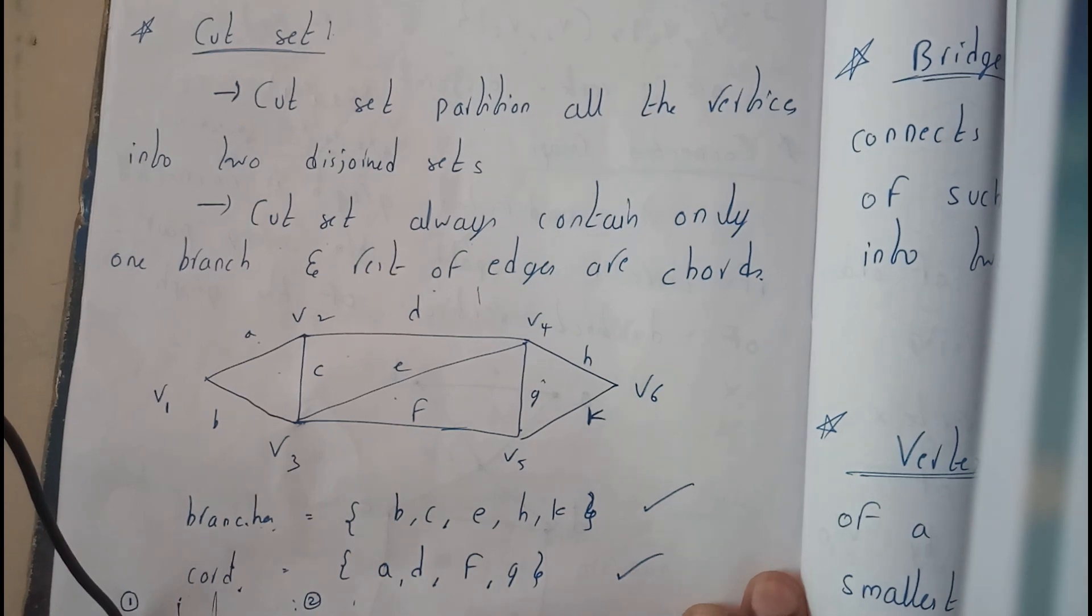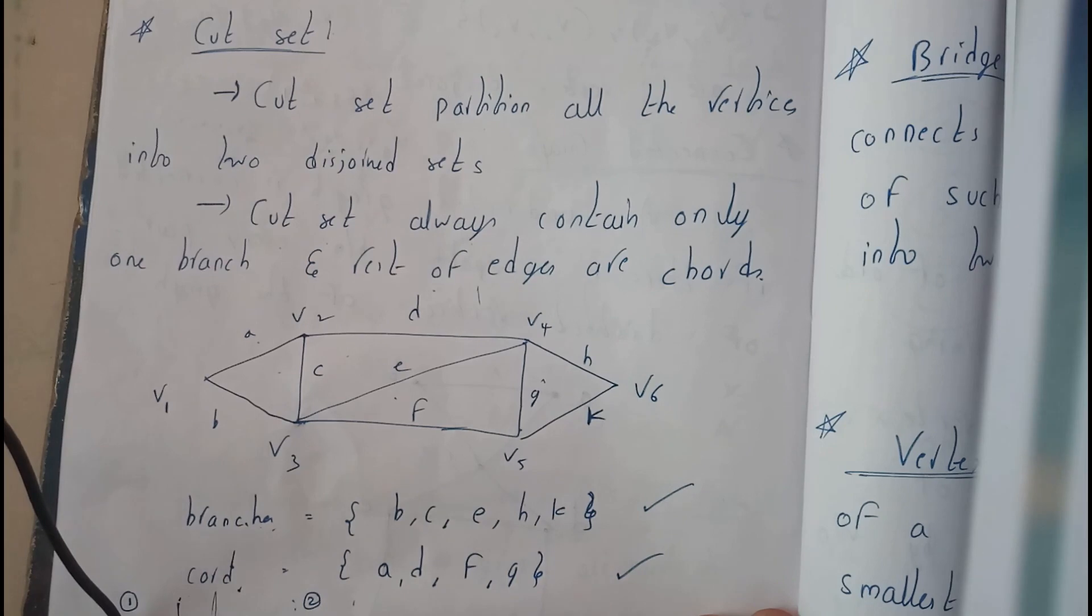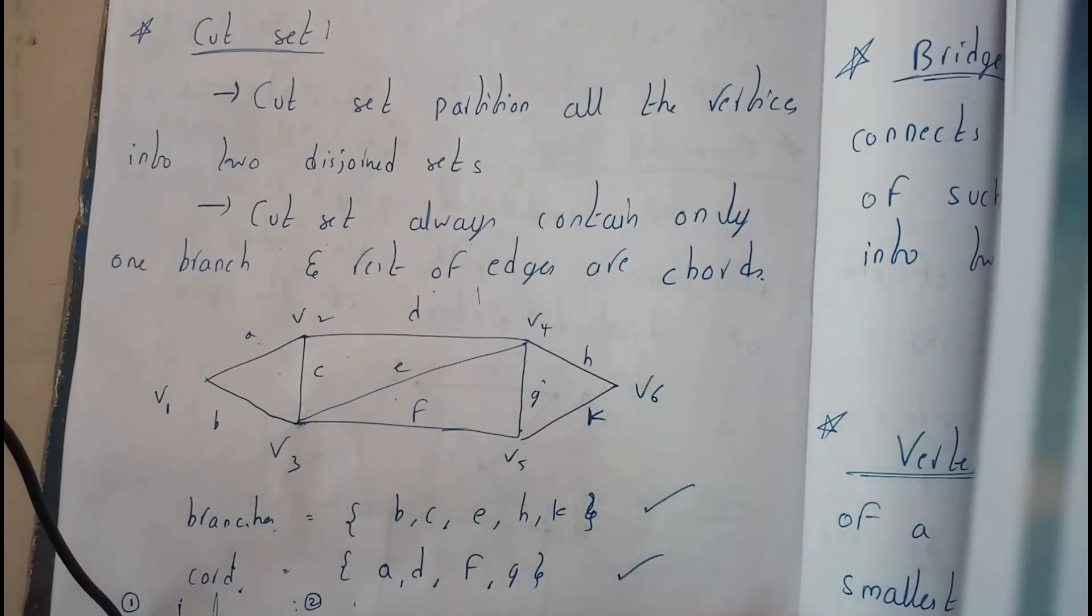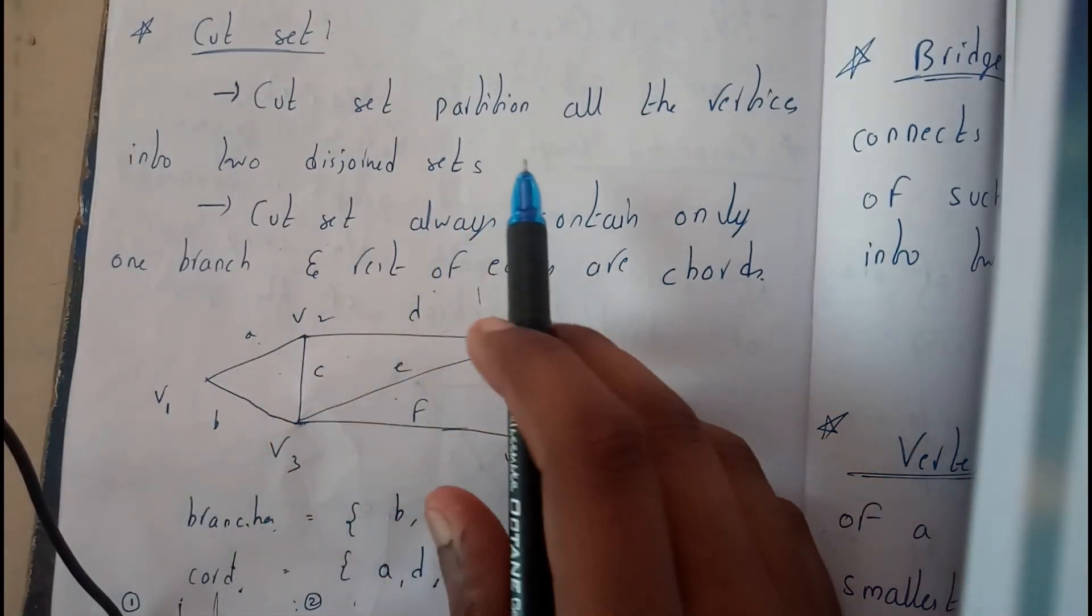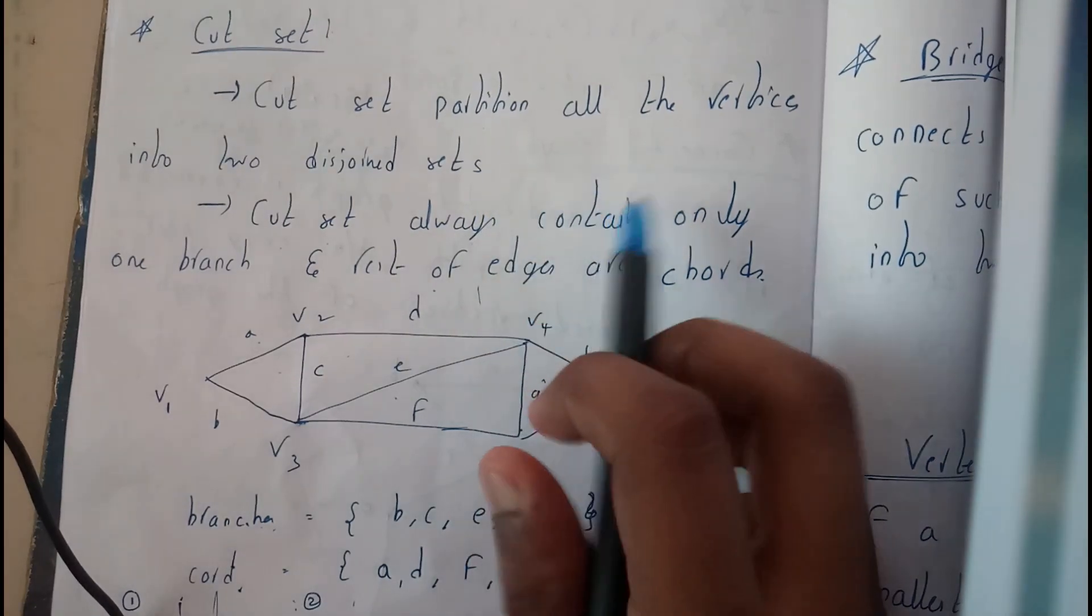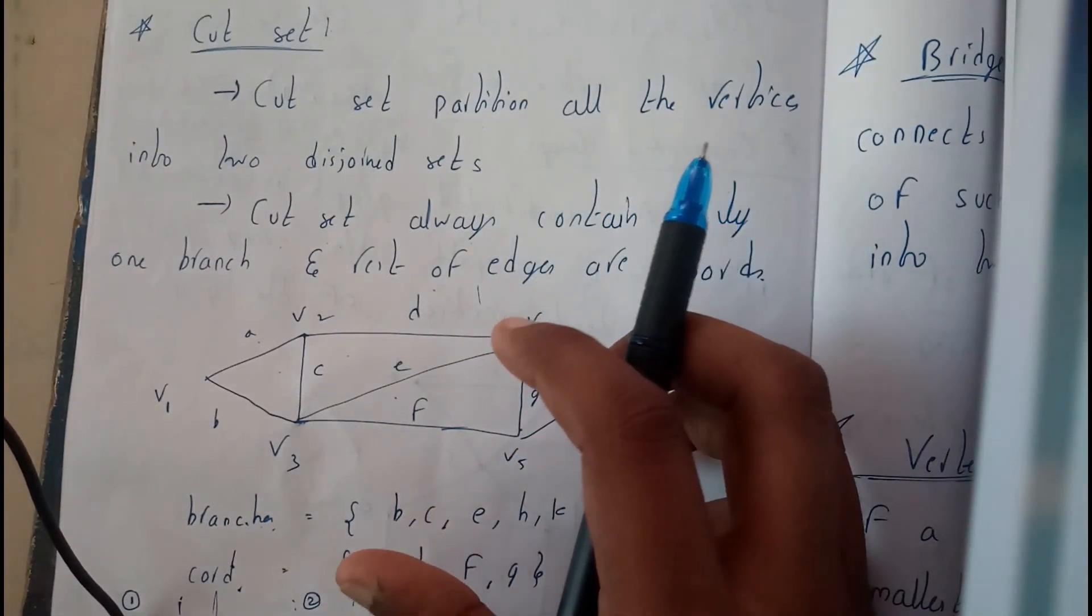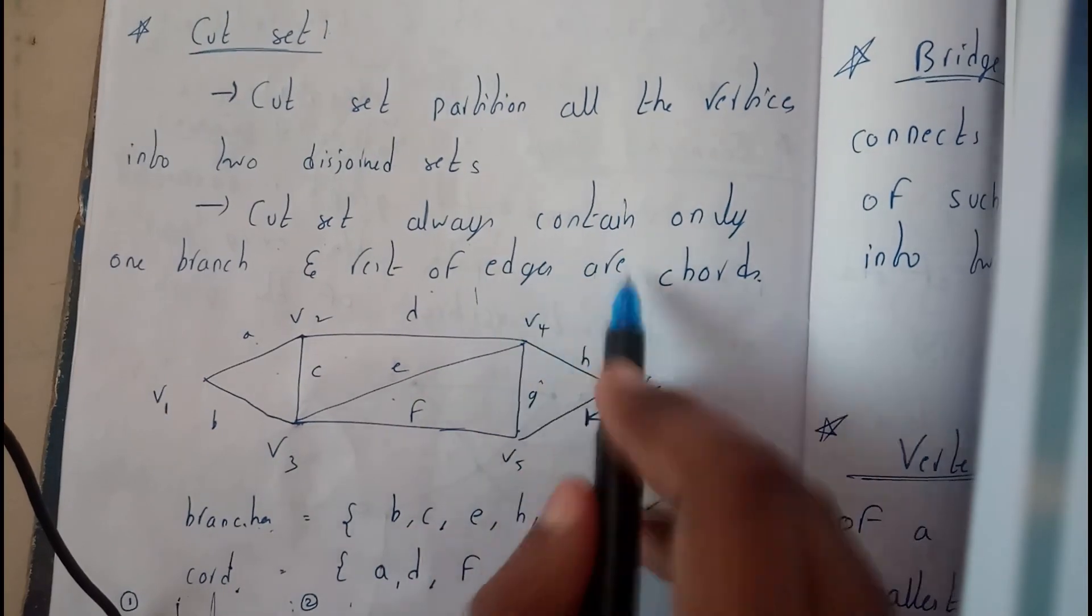In this tutorial, let's see what is a cut set. A cut set is a set of all the edges. We'll be partitioning all the edges into two different sets.